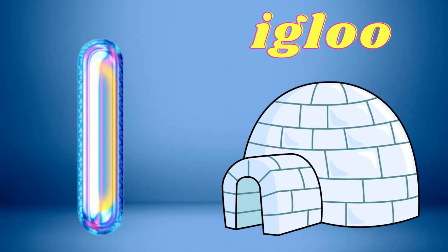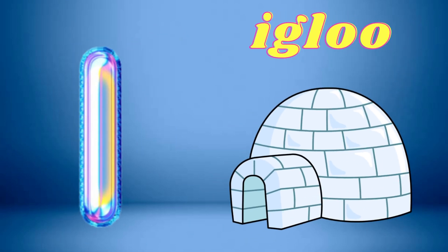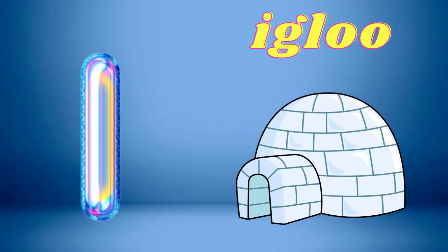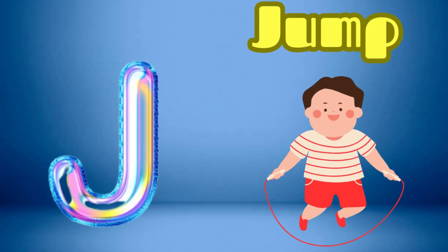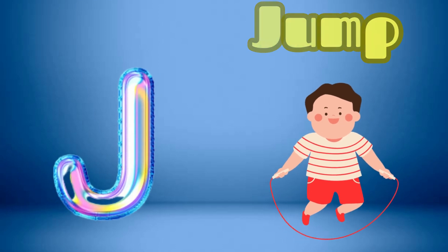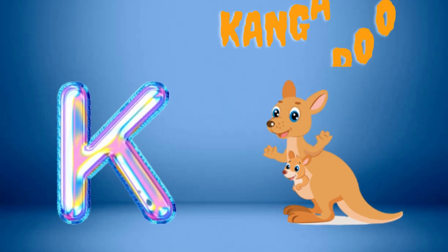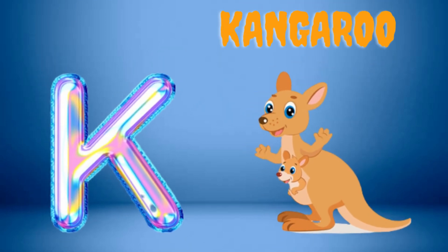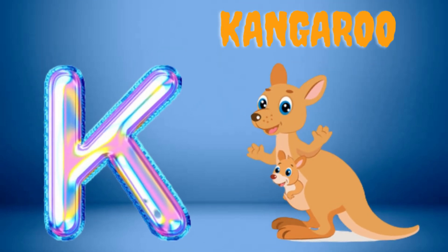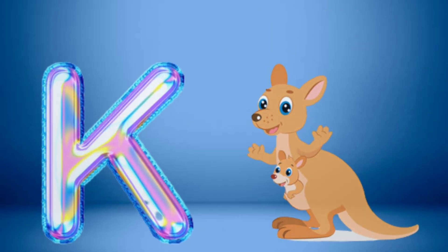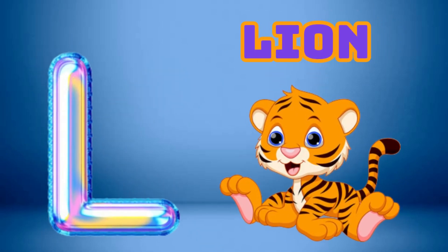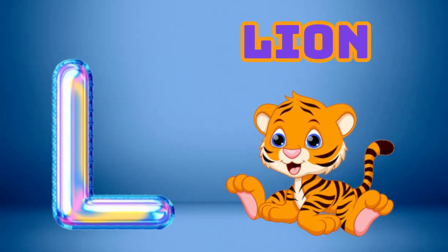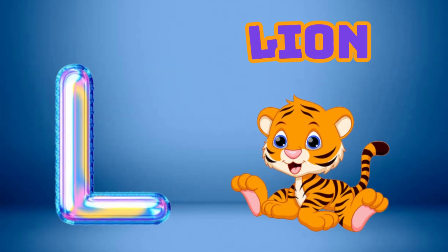I is for Igloo, I-I-Igloo. J is for Jump, J-J-Jump. K is for Kangaroo, K-K-Kangaroo. L is for Lion, L-L-Lion.